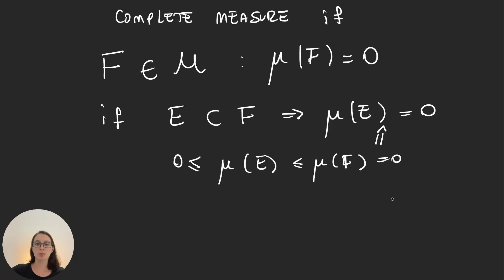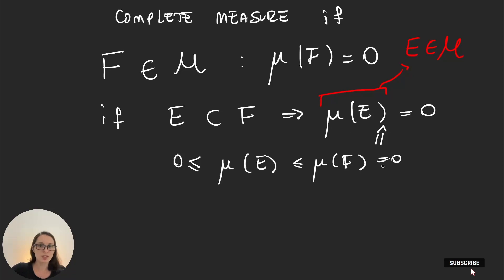But what's important about complete measures is that we can actually write mu(E). Because we're able to calculate the measure of a set only when E is an element in our sigma algebra. If E is not in the sigma algebra, then we cannot try to measure it — it's just outside the domain of our measure. So really, what complete measures are telling us is that subsets of sets of measure 0 are in the sigma algebra, and they will obviously have measure 0.